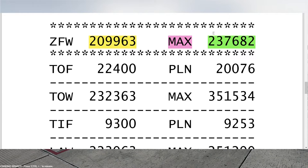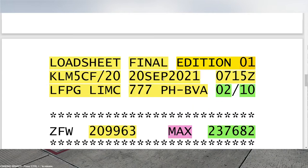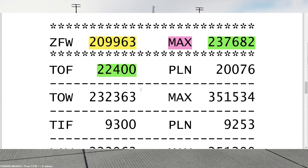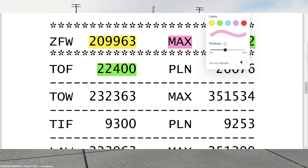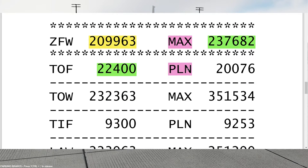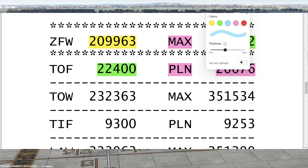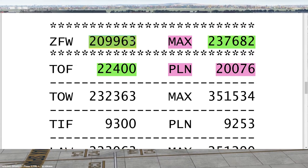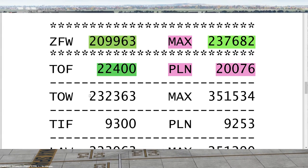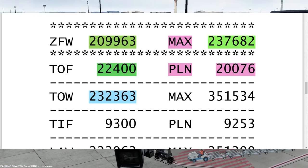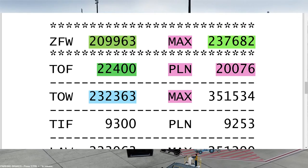In the sequence, we have the takeoff fuel: 22,400 kg — also what we informed the company — and a number for what was planned in the beginning: 27,600 kg. Then the takeoff weight: 209,963 plus 22,400 gives an actual takeoff weight of 232,363 kg. We also have here the maximum takeoff weight: 351,534 kg, which also comes from this paper.